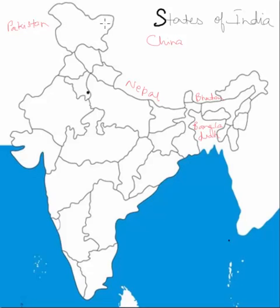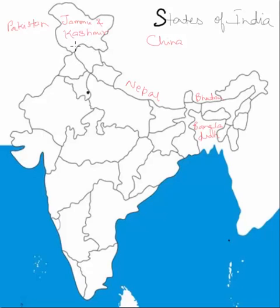We'll start with the northernmost state on the map, which is Jammu and Kashmir. Once we've placed Jammu and Kashmir, you'll see one state to its south that covers most of that part — this is Himachal Pradesh.